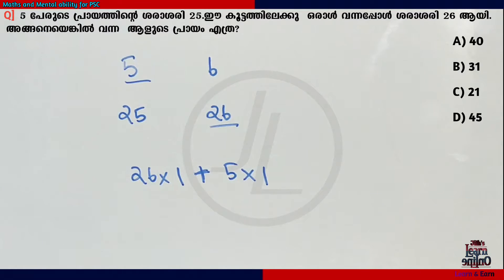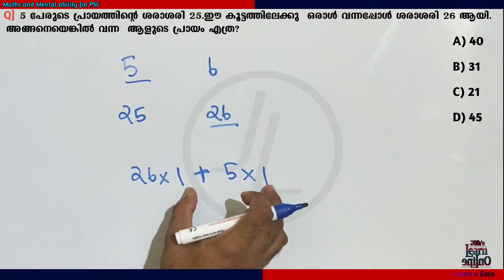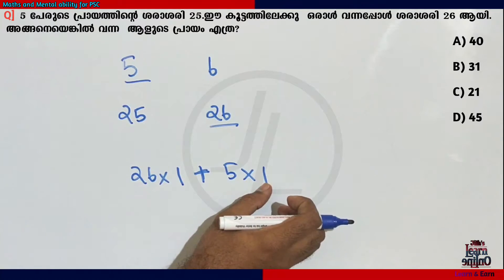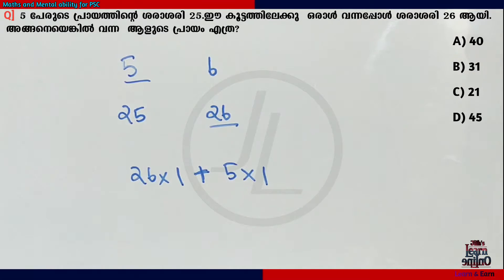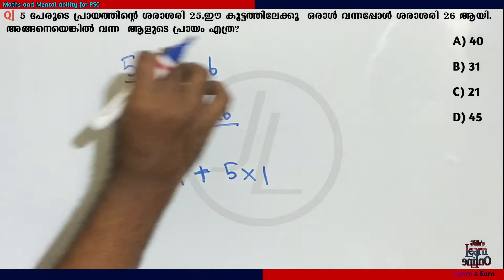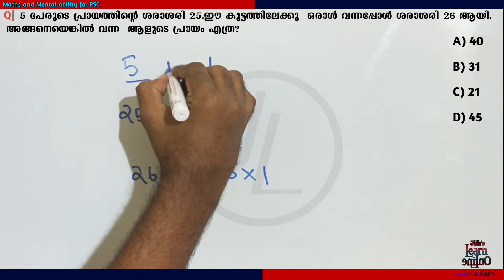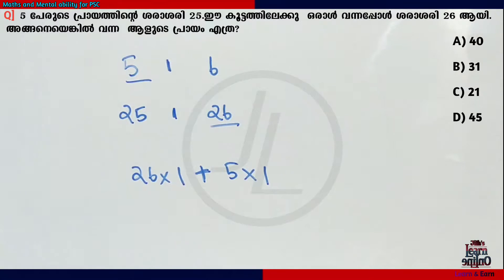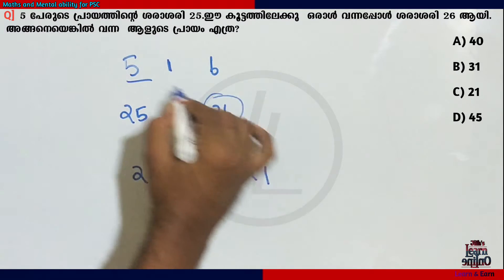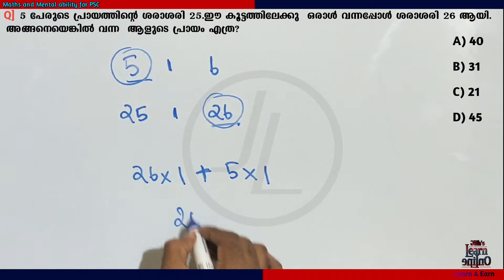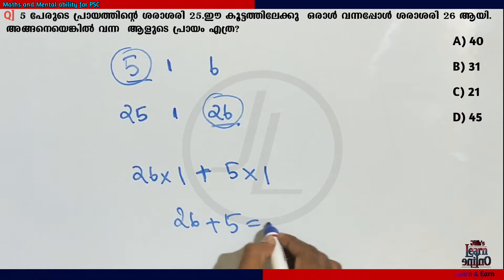The answer is — now you can ask, if you look at these numbers, you can see what type of problem this is. One problem in all the things, one problem in all the bodies. We can see: 26 plus 5 equals 31.